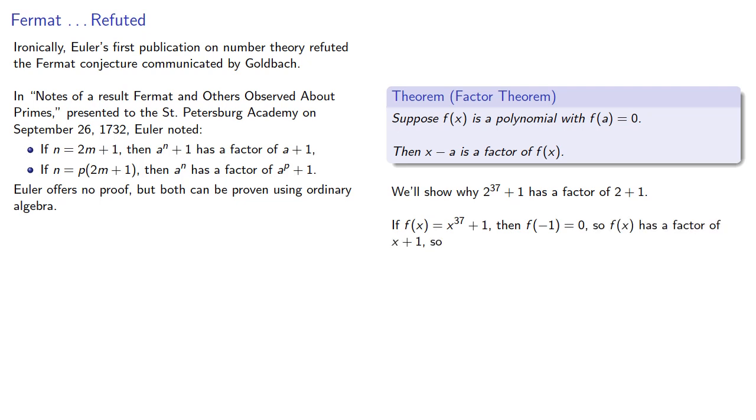So f of x has a factor of x plus 1, and so we can write x to the 37 plus 1 as x plus 1 times something else. And consequently, 2 to the 37 plus 1 is 2 plus 1 times something else, and so there's our factor of 2 plus 1.